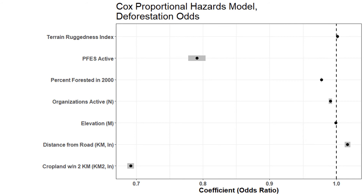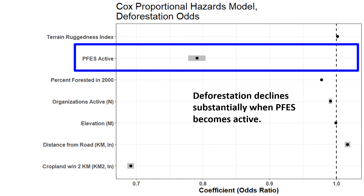Looking at the results, there are a few things that are quite important. First, deforestation declines substantially when PFAS becomes active. We estimate about a 0.23 reduction in the odds of a given pixel being deforested if it is in a province where PFAS is active. That's quite substantial, especially given that we're talking about average effects across an entire province and not necessarily capturing the exact geographies or watersheds in which PFAS is active — so the effect could in fact be stronger.